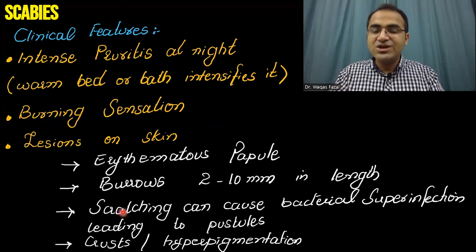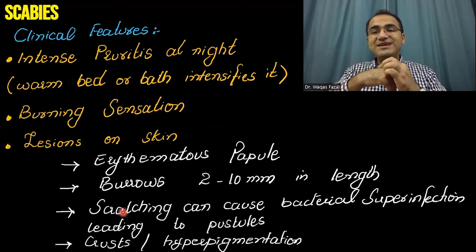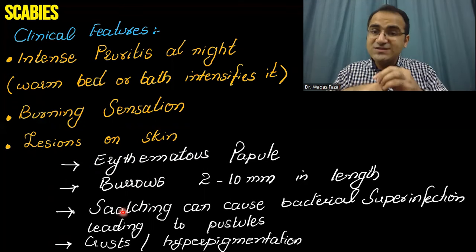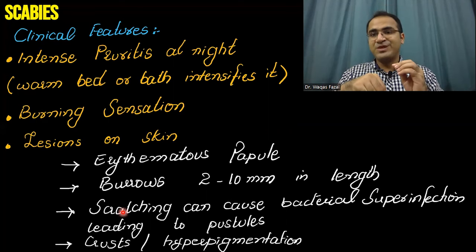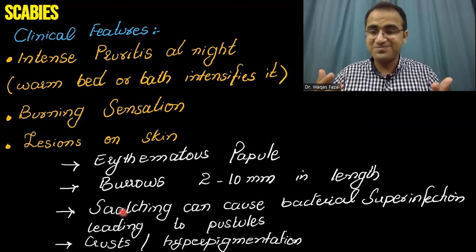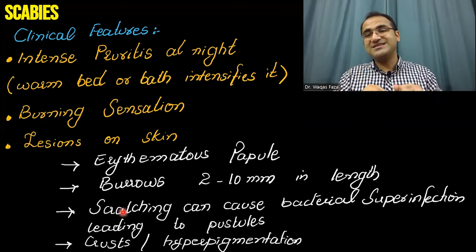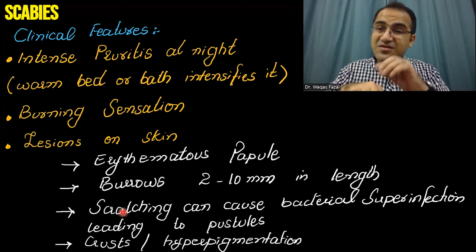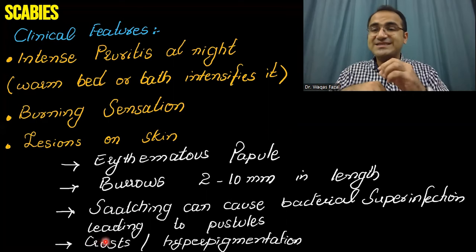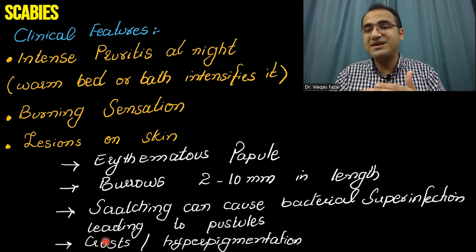The person scratches because of the itching, which further damages the skin and causes bacterial superinfection. That bacterial superinfection results in the formation of pus — pus-filled cavities are present in the skin. Later on, due to excessive itching and pus formation, crusts are formed and hyperpigmentation appears.